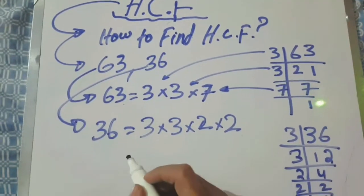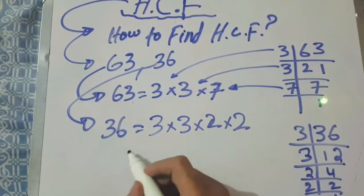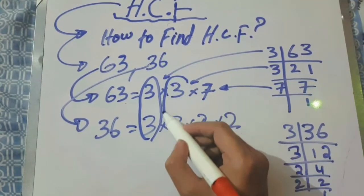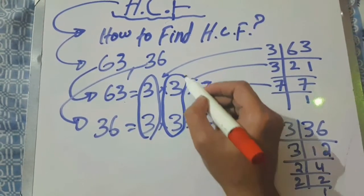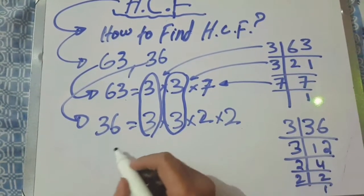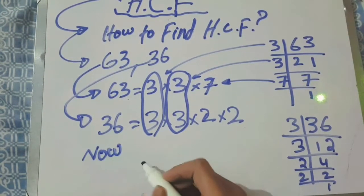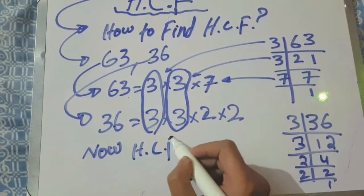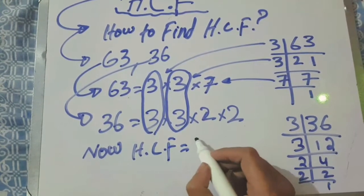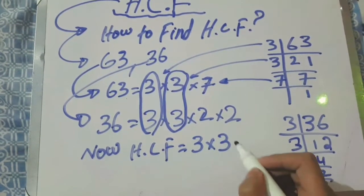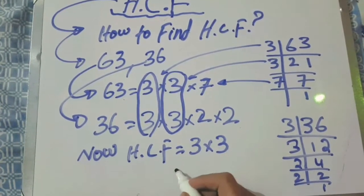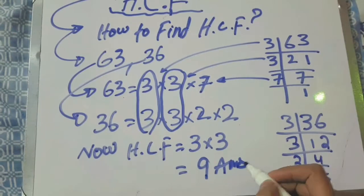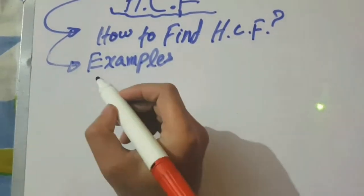Now keep in mind that in HCF we take only the common factors. We find 3 is common in both, and 3 again — these common factors repeat two times. So HCF is 3 multiplied by 3, because 3 is coming two times, giving the answer 9.